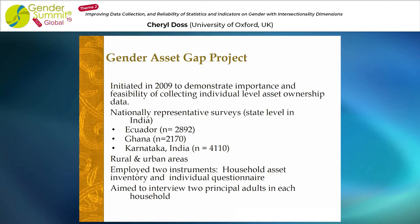When we started, whenever we asked questions about individual asset ownership, we were told that it wasn't possible to collect this data in surveys — that the best that could be done was to ask whether or not the household owned these assets, but not whether they were owned by individuals within the household. So what we decided to do was to implement nationally representative surveys in Ecuador and Ghana, and a survey representative of the state of Karnataka, India, to demonstrate that it was feasible.